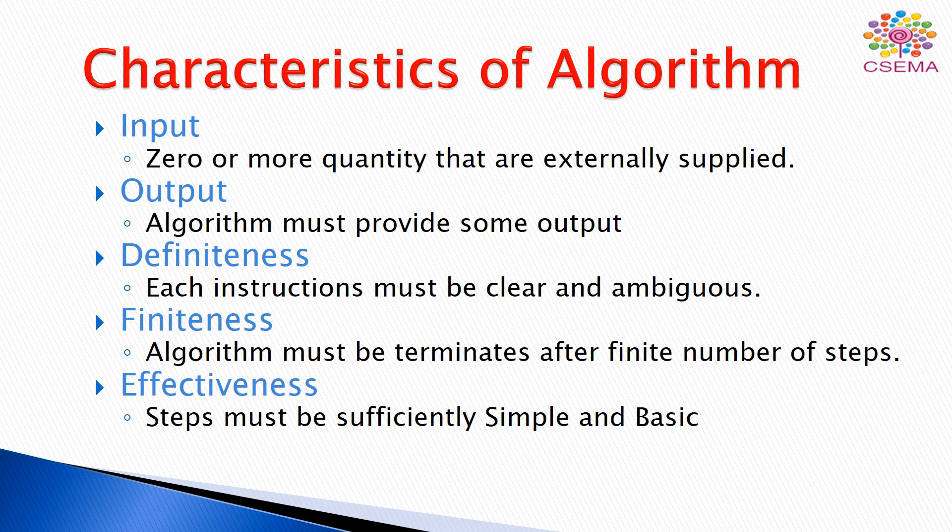Here are the properties and characteristics of an algorithm. There are five characteristics that must be followed by any algorithm. The first one is input: an algorithm must take some input. It can be zero or more quantities supplied as input to the computer or algorithm for further processing. The second is output: an algorithm must provide some output after processing or as a result of any operations.